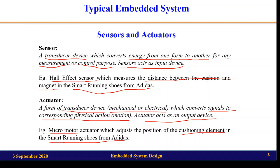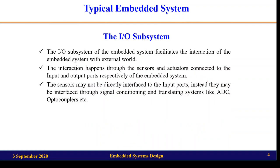Before going into detail about sensors and actuators, we need to know about the I/O subsystem. Sensors and actuators need to be connected to the microcontroller or microprocessor — the core of the embedded system — through input and output ports. The I/O subsystem facilitates the interaction of the embedded system with the external world through sensors and actuators. Sensors are connected to input ports and actuators are connected to output ports.